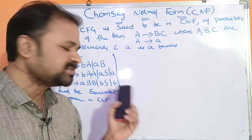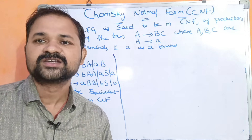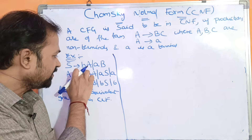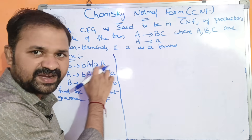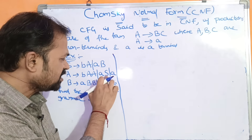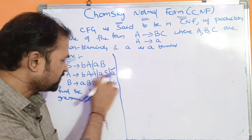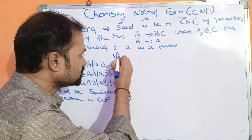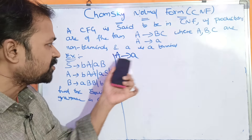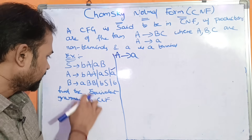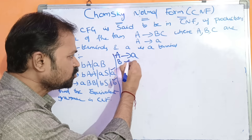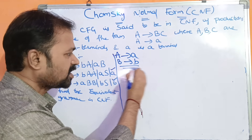Now observe the productions which are in Chomsky Normal Form. A produces A — non-terminal produces terminal symbol — so this is in Chomsky Normal Form. Similarly, B produces B. So these two productions are already in CNF.